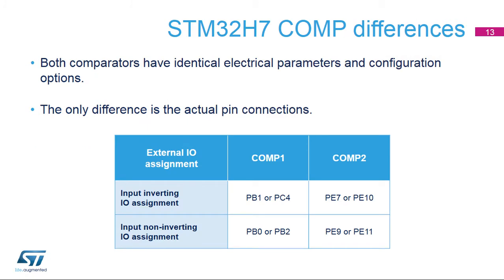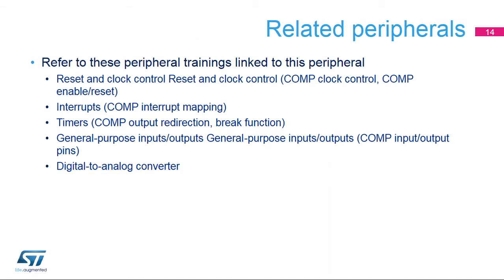Both comparators have identical electrical parameters and configuration options. The difference in input interconnections are summarized in this table. For the difference in output redirections, please refer to the product data sheet. This is a list of peripherals related to the comparators. Please refer to these peripheral trainings for more information if needed.